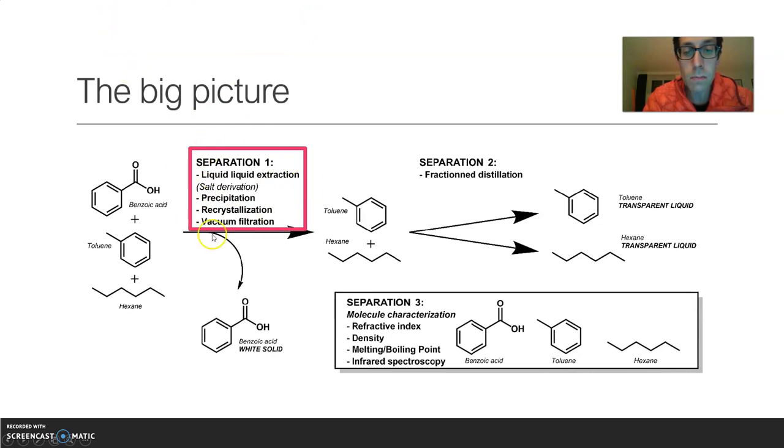Tomorrow, in the pink square here, we're going to perform a liquid-liquid extraction. I talked to you about that, a precipitation, a recrystallization, and a vacuum filtration. And that will allow us to separate the benzoic acid from the mixture and then have toluene and hexane on their own after tomorrow.